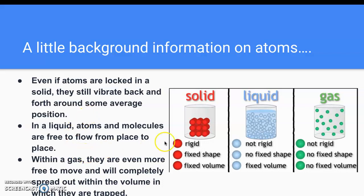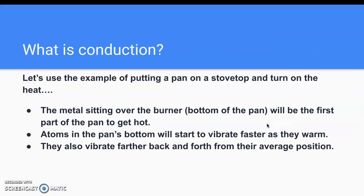So what do these atoms and molecules look like? In a solid, the atoms are held together in a rigid configuration. There's a fixed shape and a fixed volume. In liquid and gas, they're not in rigid configurations. In liquid, there is no fixed shape, but there is a fixed volume. In gas, there is no fixed shape and no fixed volume. And we're going to get into what that means when we get to convection.